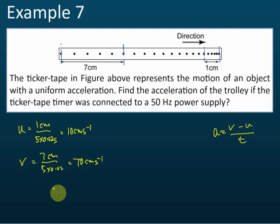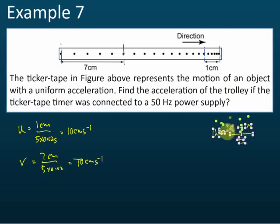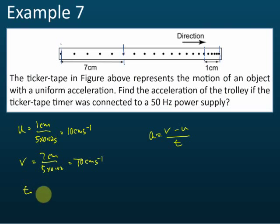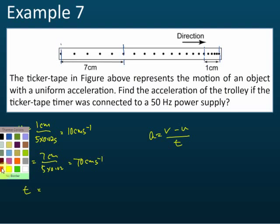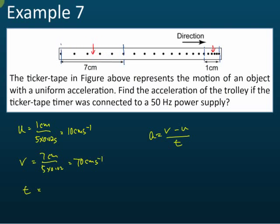Now we need to find t. t is the time taken from u to v. First, you must know where your u and v are — as I mentioned, they are always in the middle of the length being measured. This length spans five ticks, so from the middle to the end is 2.5 ticks.